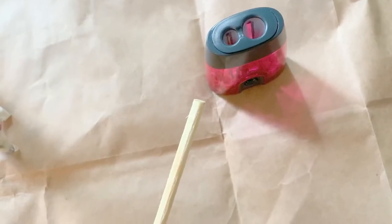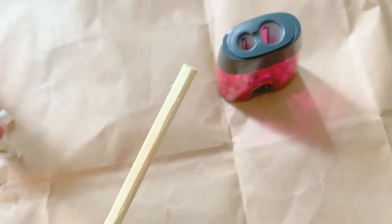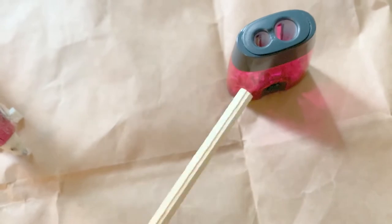Now since the end of the chopstick is flat I'm just going to use a pencil sharpener to sharpen the end of it a little bit to make it a little bit more pointy like a wand might actually be.